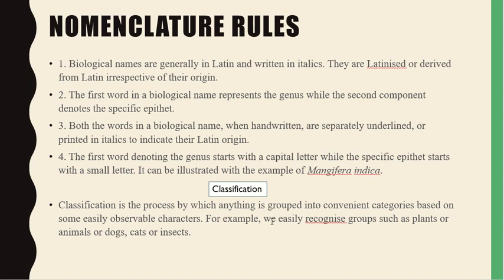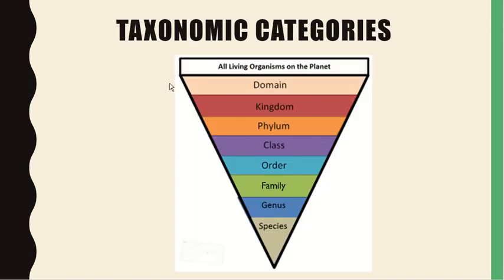For example, we easily recognize groups such as plants or animals, or dogs, cats, or insects. What are taxonomic categories? Taxonomic hierarchy is the process of arranging various groups of organisms into successive levels of biological classification in a sequence, either in decreasing or increasing order: Kingdom, Phylum, Class, Order, Family, Genus, Species. You have to learn this sequence.